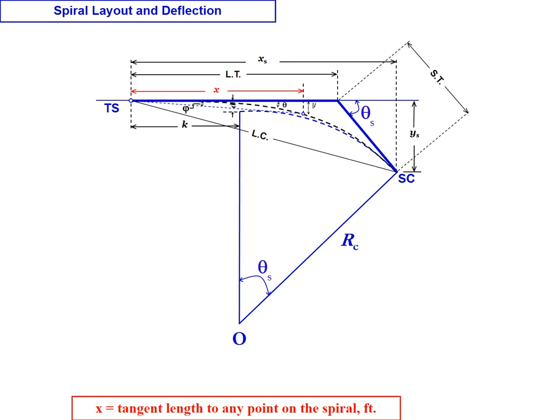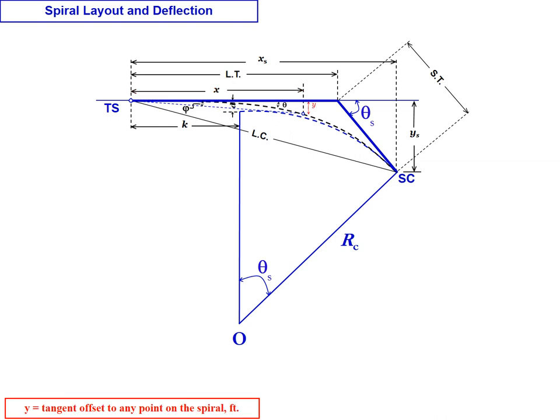X is the tangent length to any point on the spiral, so moving along the tangent if we're trying to denote a specific point. X is that distance along the tangent, and the related lateral offset is Y. That's the tangent offset to any particular point of interest on the spiral.